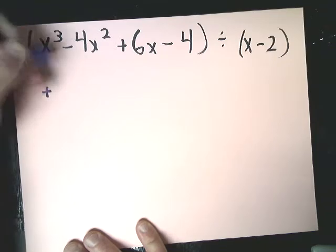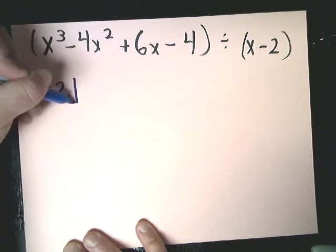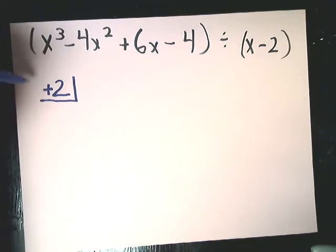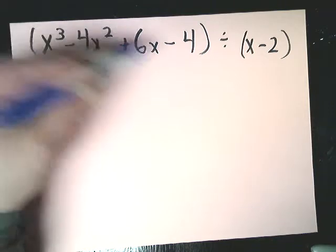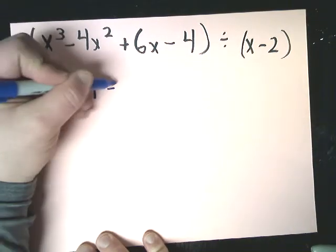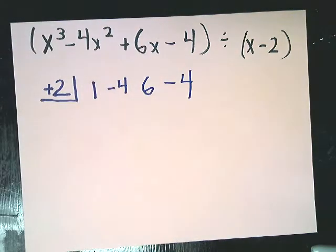You take whatever the little dividing number is, the x minus whatever, x plus, you want to change it to the opposite sign. Then I want to put the coefficients of the numbers in the original polynomial. So 1, negative 4, 6, and negative 4. Pretty simple stuff.